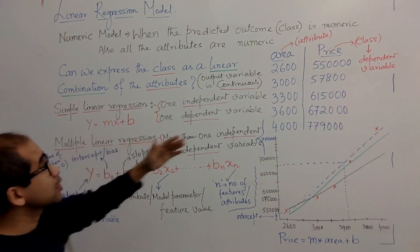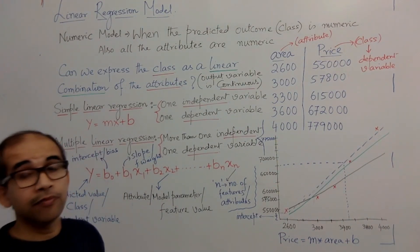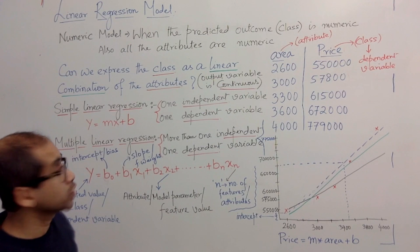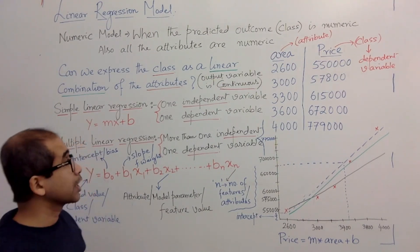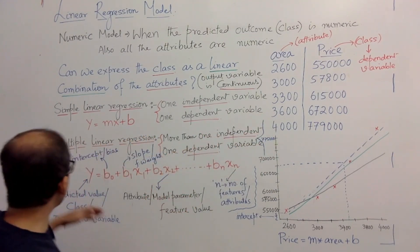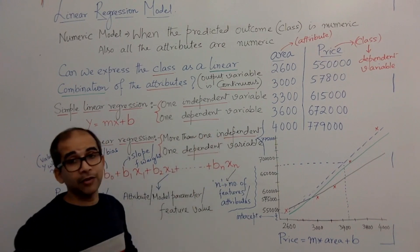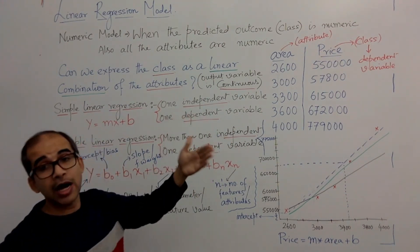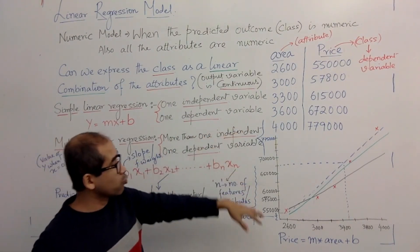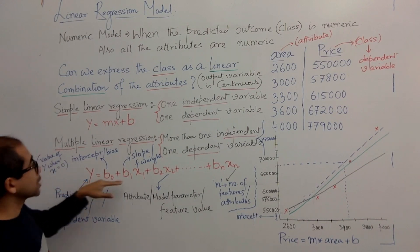Now let's say price is not just dependent on area but also on a few other factors like the year built or number of bedrooms — features which are also numeric. Then this becomes a combination of those variables. This is called multiple linear regression, where you have more than one independent variable — like area, year built, and number of bedrooms — and one dependent variable y. The equation is written as: y = b0 + b1x1 + b2x2 + ... + bnxn.